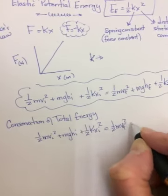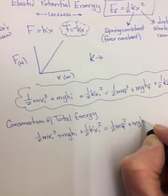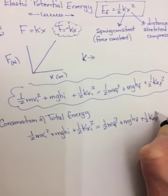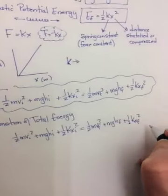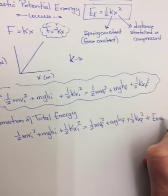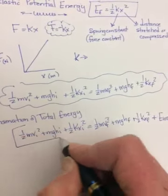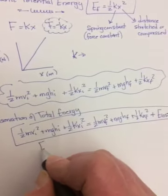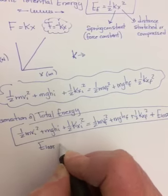Because we do 1 half mv initial squared plus mgh initial plus 1 half kx initial squared equals 1 half mv final squared mgh final plus 1 half kx final squared. And then to make it total energy, we add plus e lost.